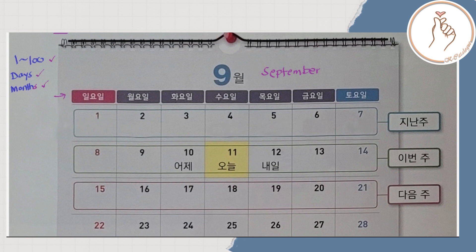Quick review of yuwil — that means 'day.' We have: Iriwil — Sunday, Wariwil — Monday, Huaywil — Tuesday, Suyuil — Wednesday, Moguil — Thursday, Kumuil — Friday, Tuyuyil — Saturday. So again, that's linggo, lunes, martes, merkeles/Miercoles, viernes, sabado.